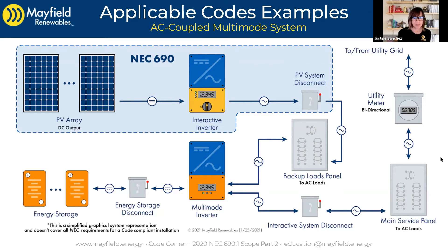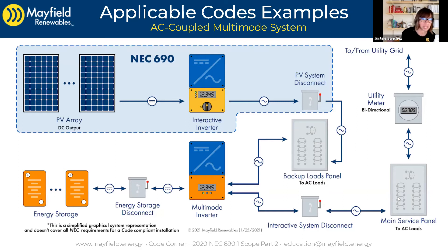An interesting thing to note is we have two inverters here. In the previous slides, there was just a single inverter or multiple microinverters — interactive inverters — not involving anything that could operate in different modes like a multimode inverter. In this case, the multimode inverter means we have moved that PV system disconnect output from being combined or tapping into the main service panel. We've actually moved that connection into what we're calling a backed-up loads panel. That's a key thing to note with this AC coupled system — that connection looks different versus a strict grid-interactive system.